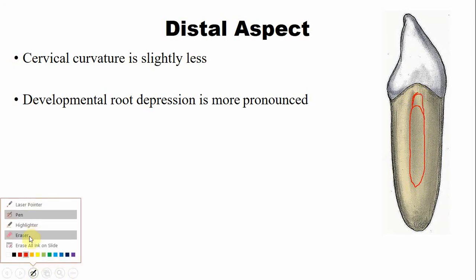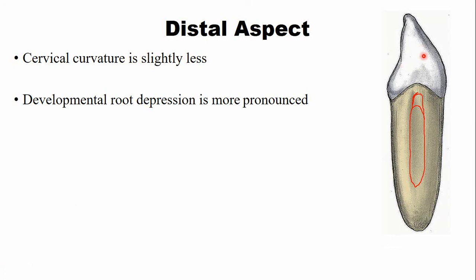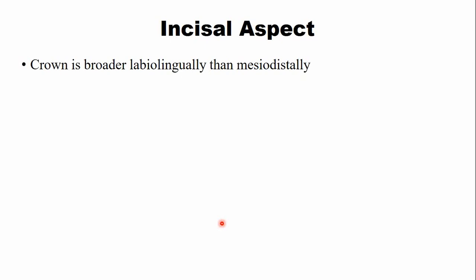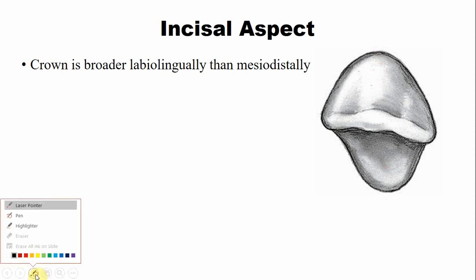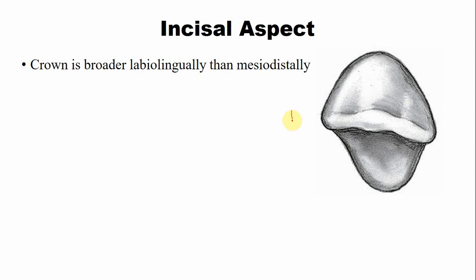From the distal aspect, the crown appears more thicker compared to the mesial side because of the presence of the incisal surface slope, making the crown appear more bulky from the distal aspect. From the incisal aspect, the crown appears broader labiolingually than mesiodistally — the labiolingual dimension is greater than the mesiodistal dimension.